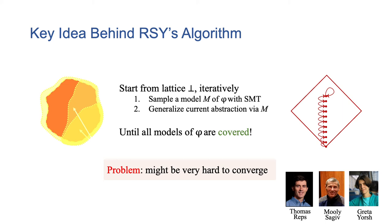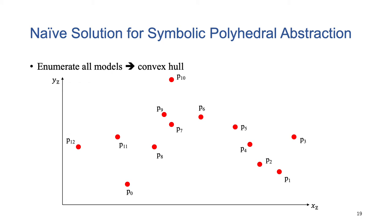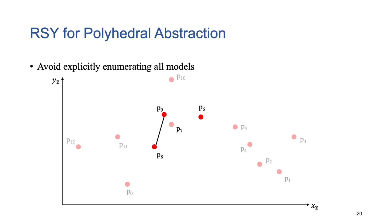A key problem is that this process can be very expensive. It may take a long time to terminate. Now, let's consider the previous formula. It has 13 models, from P0 to P12. Intuitively, its best polyhedral abstraction is the convex hull of all the models, because it is the smallest convex set covering the models. To compute the best polyhedral abstraction, a naive solution is to first enumerate all models, and then compute their convex hull. This is impractical, because a formula can have many, many models. Now, let's consider the RSY algorithm. By iteratively sampling models and generalizing an intermediate polyhedron, it can avoid explicitly enumerating all models. For example, suppose we have computed three models, P8, P6, and P9. We will compute its convex hull as an intermediate polyhedron. It can cover the model P7 automatically.